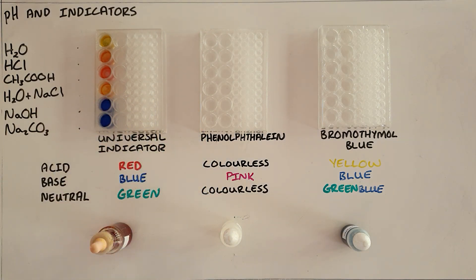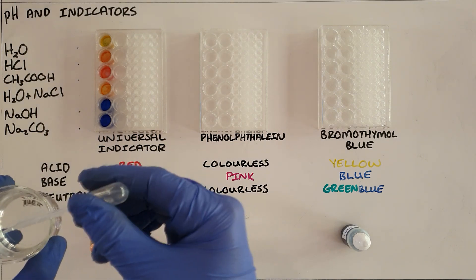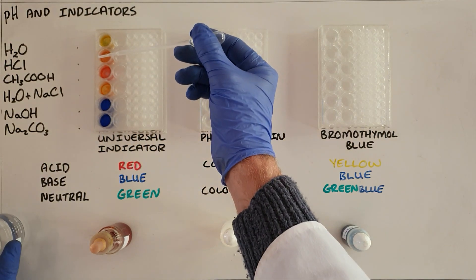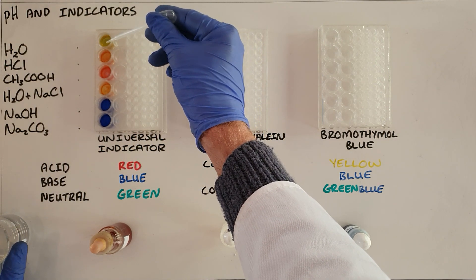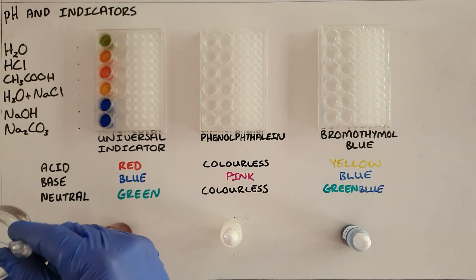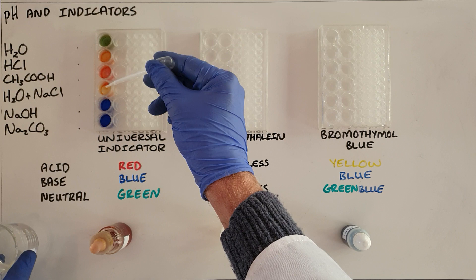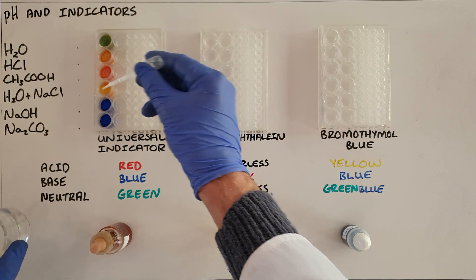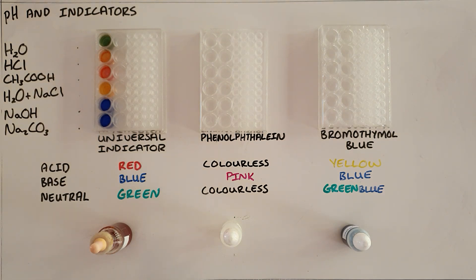We can see that the two solutions containing water which we would expect to be neutral are on the verge between green and yellow and what we can find is that just by adding a bit more water we can see more clearly that those two solutions are green which tells us that we have a neutral solution.